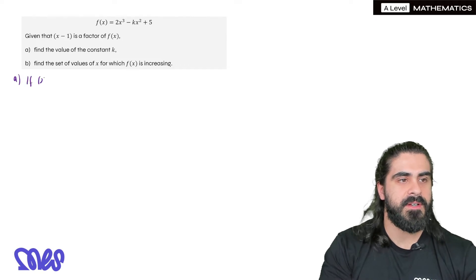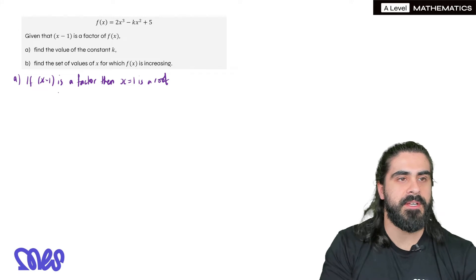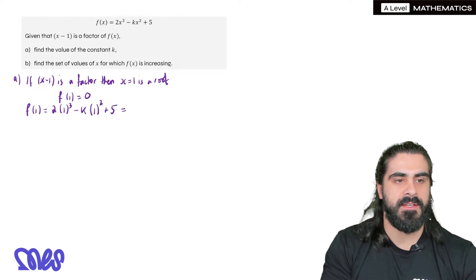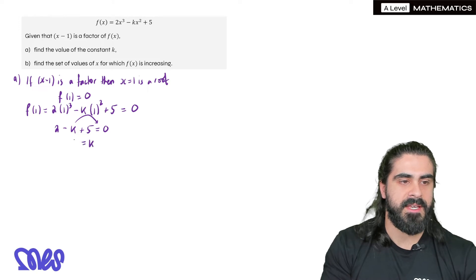We're going to say if x - 1 is a factor then x = 1 is a root. Now what does it mean to be a root? It means if you substitute in 1 into f we get 0. So f(1) will be 2(1)³ - k(1)² + 5, that equals 0. So we get 2 - k + 5 = 0. Move the k over. We get k is 7.